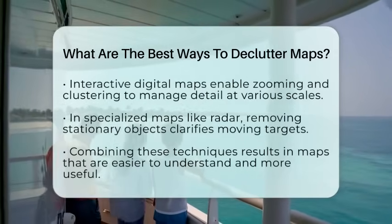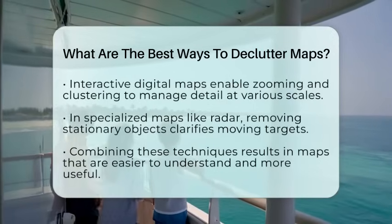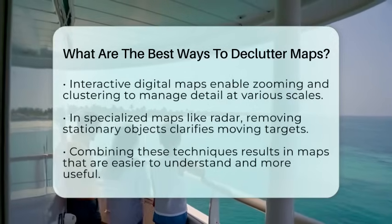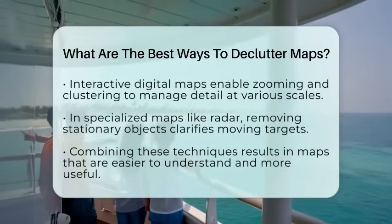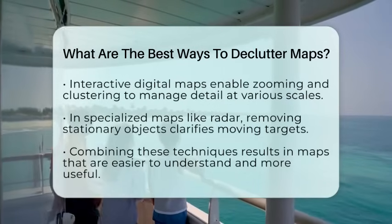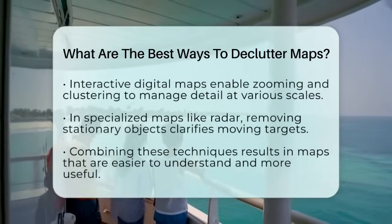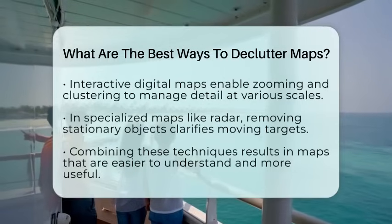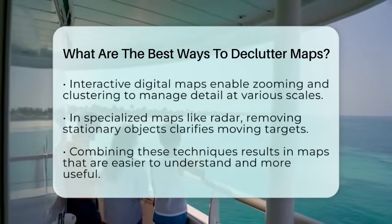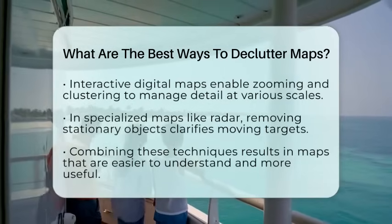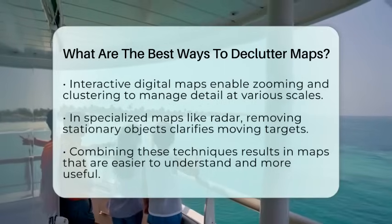In specialized applications like radar mapping, clutter maps can identify stationary objects like buildings and subtract them from the display. This clears the view of irrelevant signals and highlights moving or relevant targets.